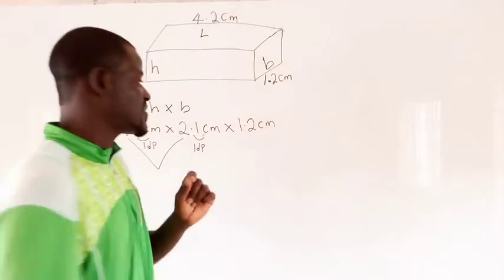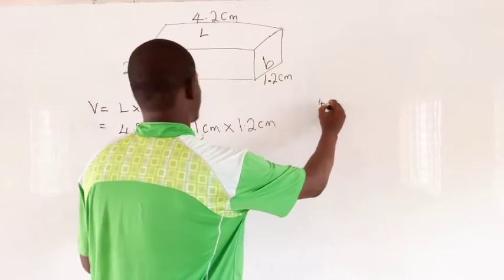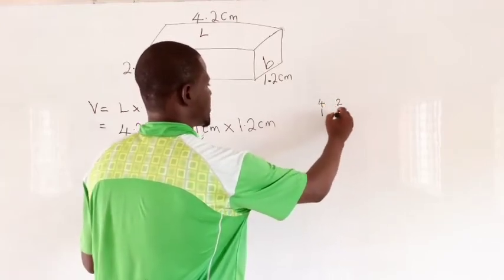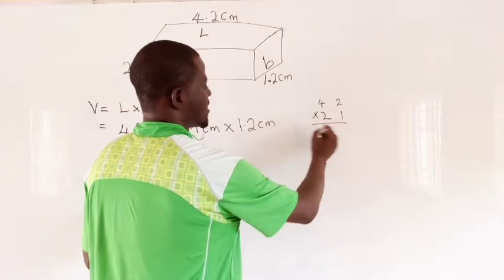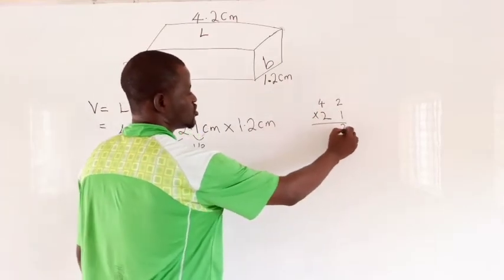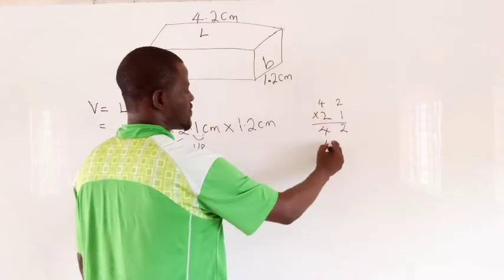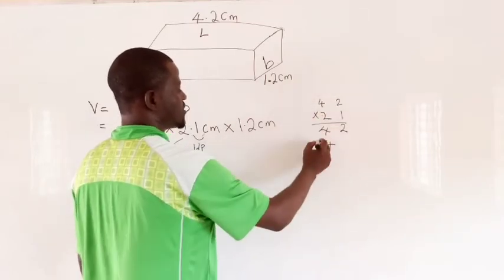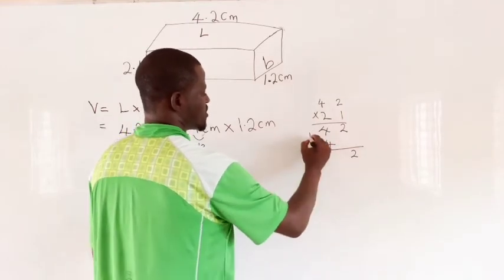4.2 times 2.1. 1 times 2 is 2, 2 times 1 is 2. 1 times 4 is 4, 2 times 2 is 4, 2 times 4 is 8. So you are going to add.